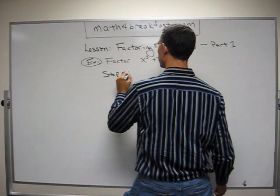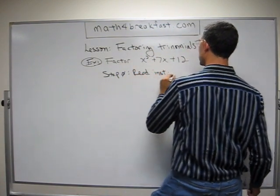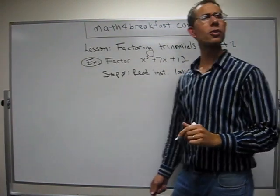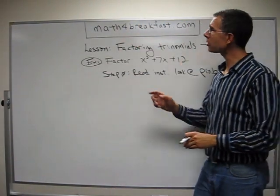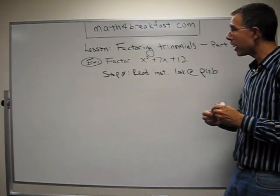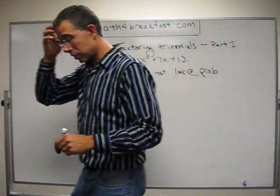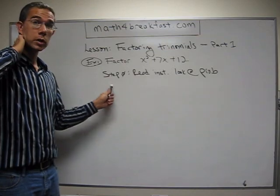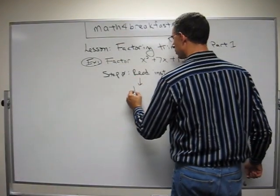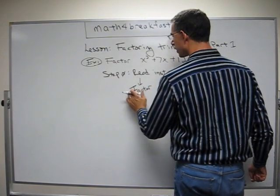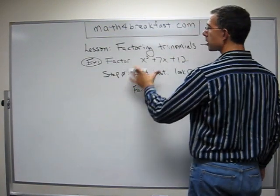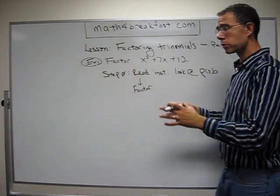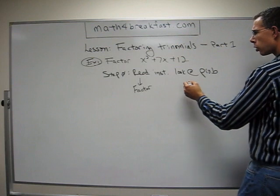Step 0 is to read the instructions and to look at the problem. What in the world is Step 0? Really, go to MathForBreakfast.com and read about Step 0 — why a semi-conscious human being would come up with Step 0 to tell you to do what you're already doing. Alright, factor. Because when I read the instructions, I see the word 'factor,' and that tells me I want to split up something into other things that would multiply back to what I started with.